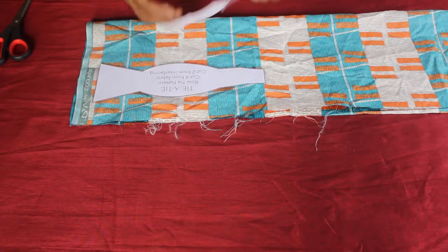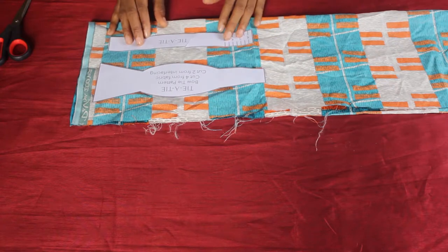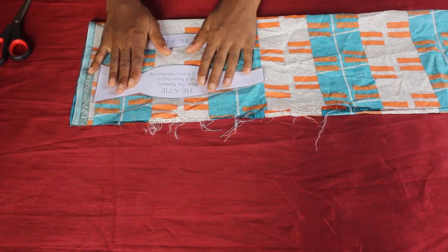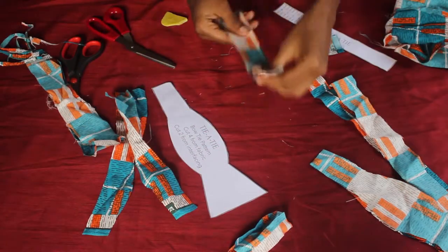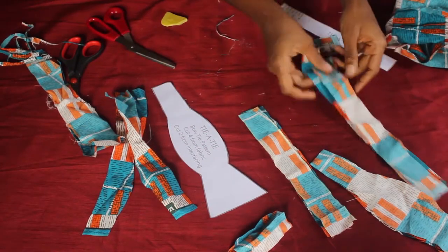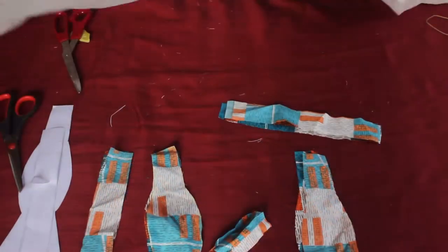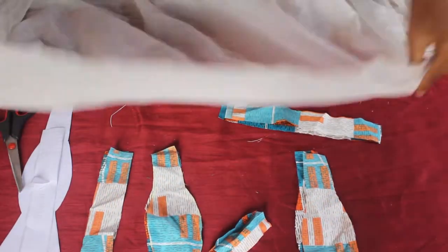Next we're going to take some soft interfacing fabric and we're going to use the pattern paper to cut out two pieces each.